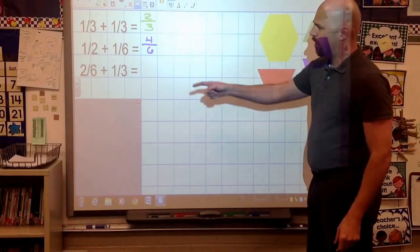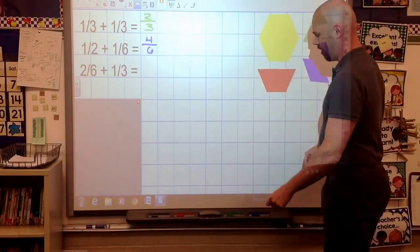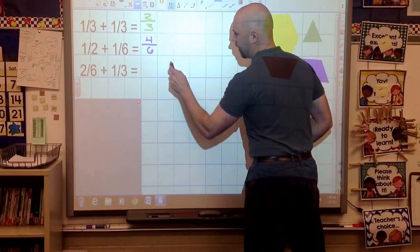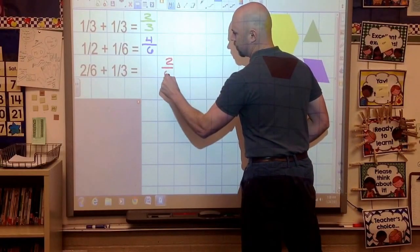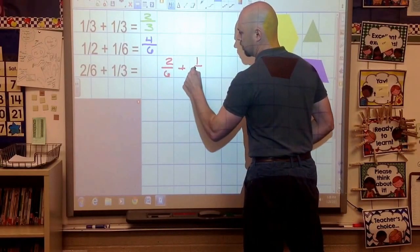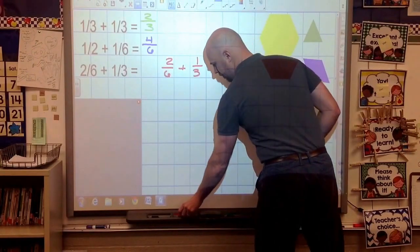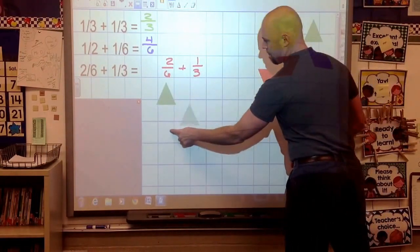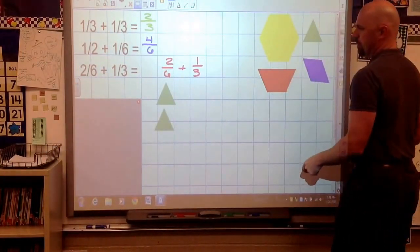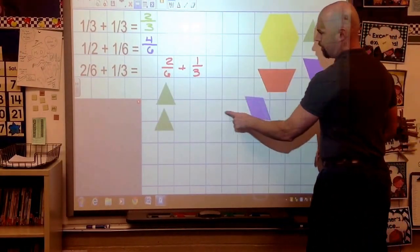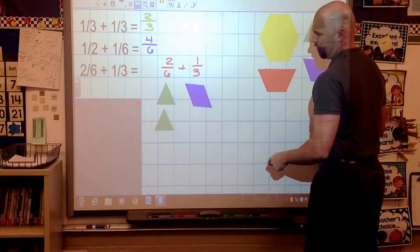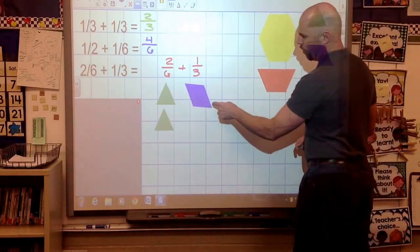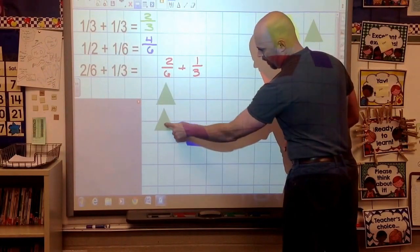So let's try it again here. Now I have 2/6 plus 1/3. So once again, let me rewrite this problem. And 2/6, there's my two triangles, and 1/3, my rhombus. And let's start building it. Let's try and build towards a whole here. So now we've got kind of a trapezoid and a triangle.